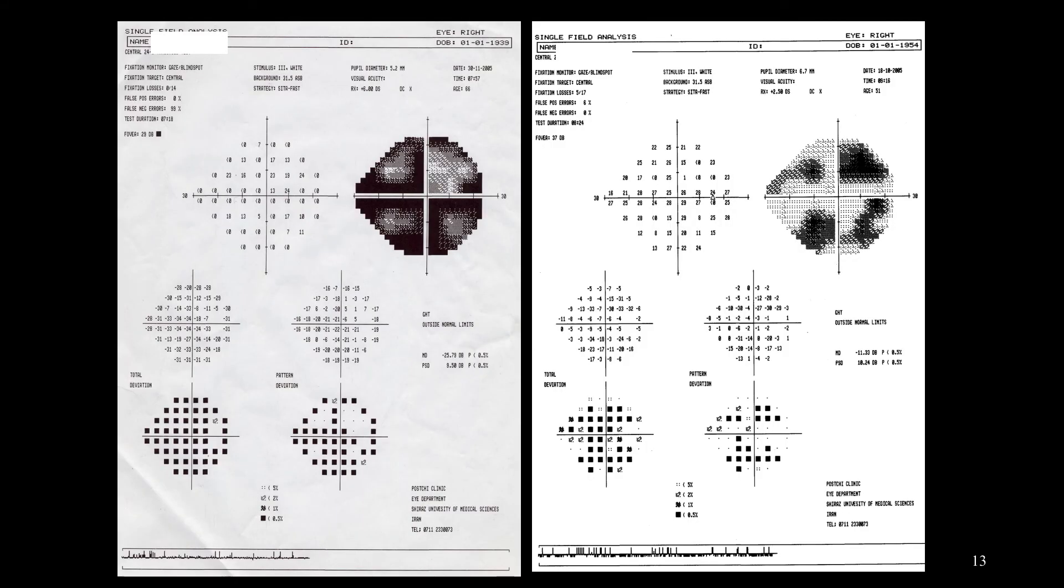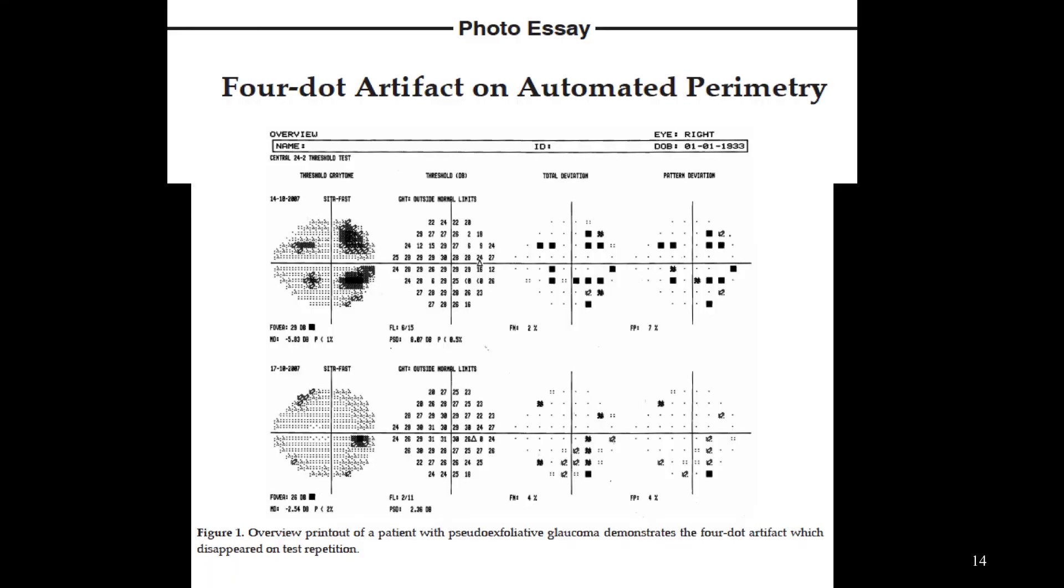On the left side we have false negatives in a visual field, and on the right side this is also false negative. But the difference in the second one is lack of response to the initial stimuli and then responding as the test was going on. This is called four dot artifact, when the patient does not respond to the initial stimuli and then starts responding.